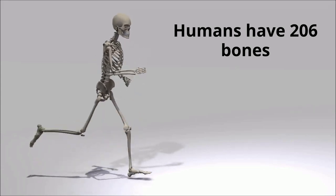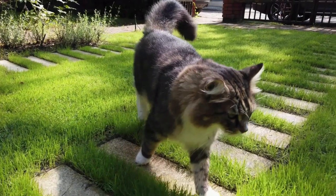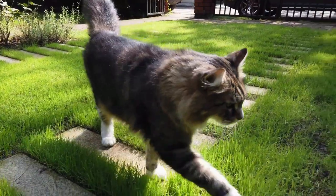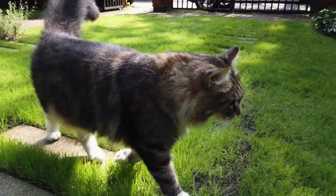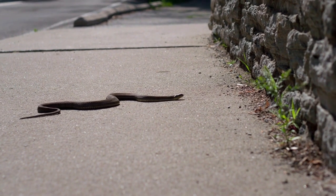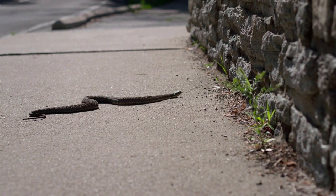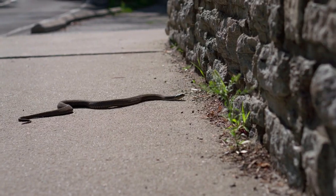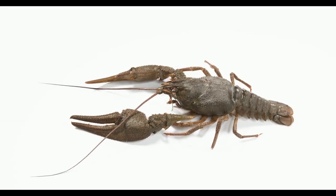Humans have 206 bones in their body. The average cat has 244 bones in its body, and snakes, the most bony animals, have around 1800. Can you guess how many bones a lobster has?